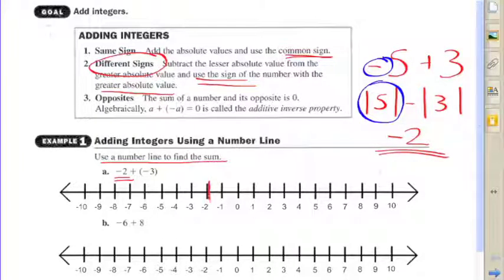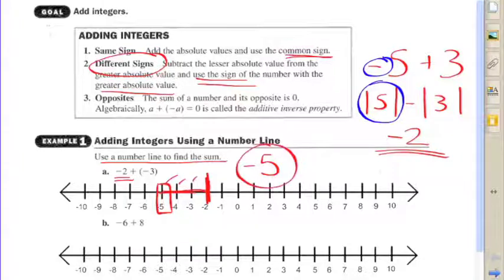you can simply start at negative two and then count three spaces to the left. Since we're adding a negative, you would move to the left on the number line as numbers get smaller when you move left. And of course, we land on negative five because we counted three to the left, and that is your answer.